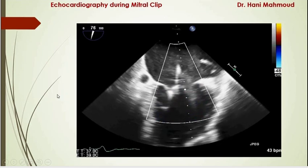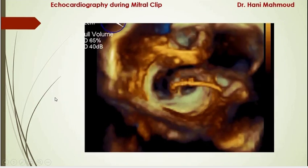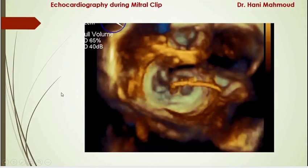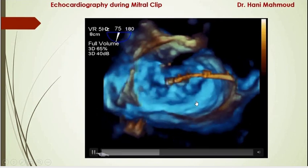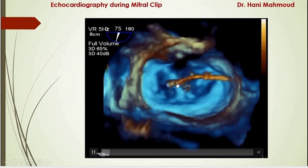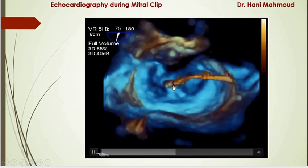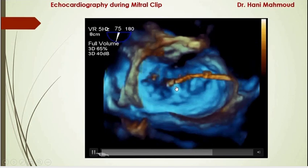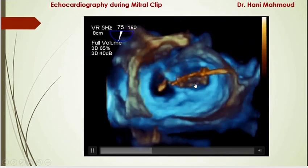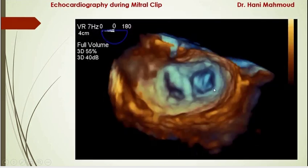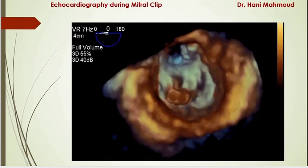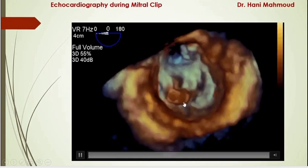We also optimized the heparin dose and ACT to overcome stasis. After obtaining a satisfactory result, we asked the interventionist to release the second clip. Once released, he withdrew the remaining system through the sheath — this remainder acts exactly like a needle and can easily harm any part of the left atrium, so it must be followed carefully. The final view from the left atrial perspective shows a double orifice mitral valve. From the left ventricular perspective, we can see the tips of the two clips, with the medial orifice and lateral orifice both visible.